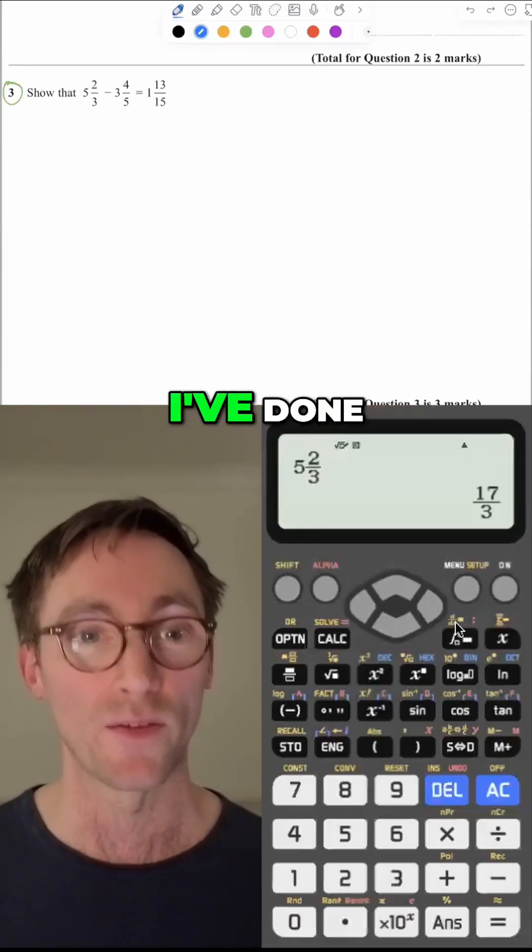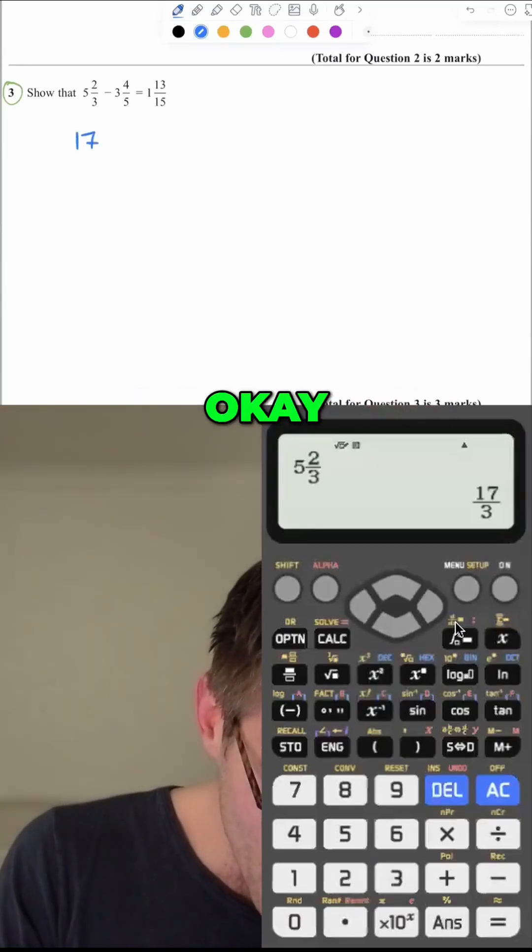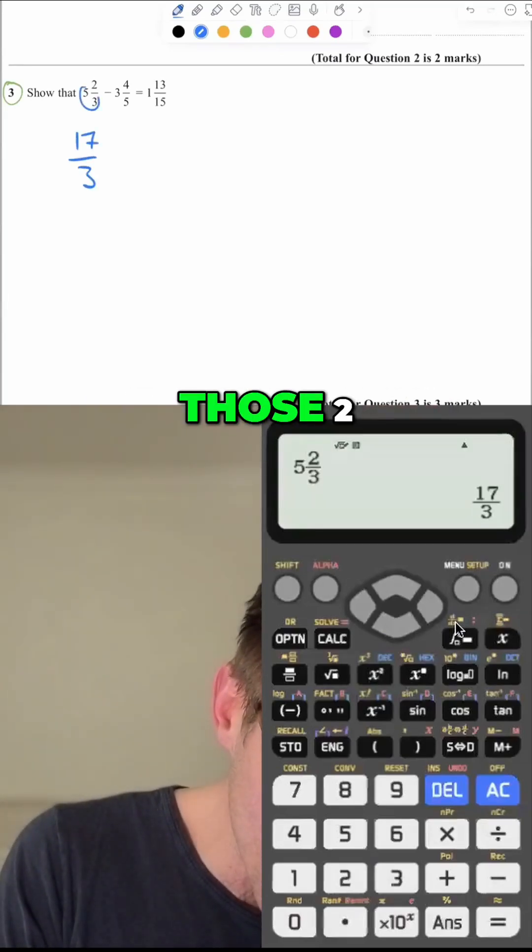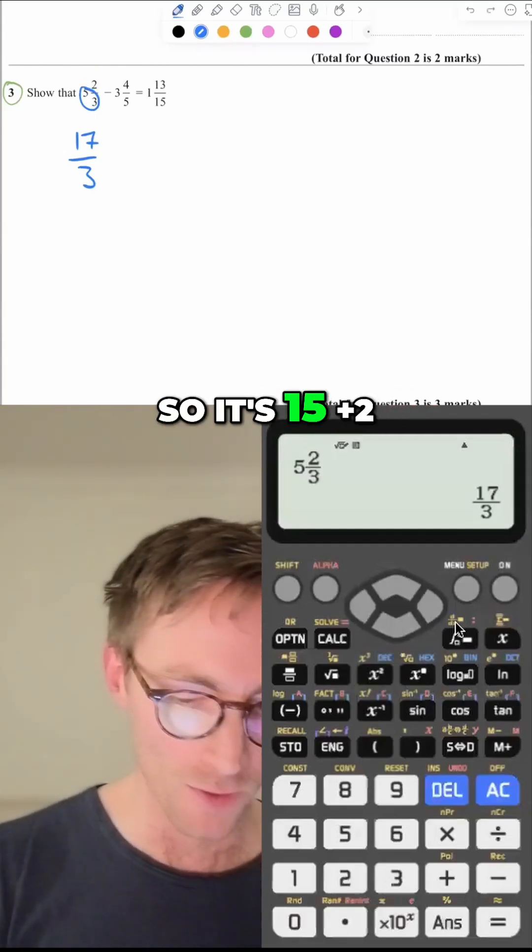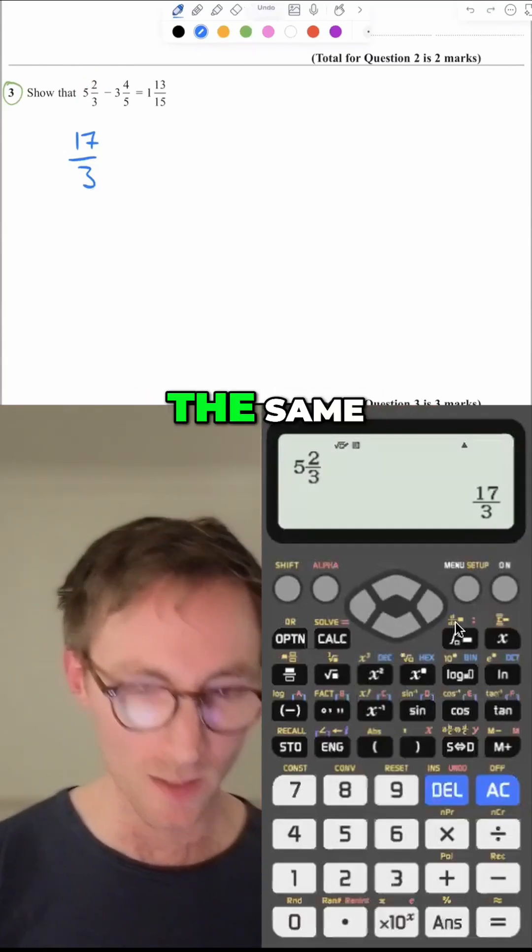And you get 17 over 3. I've not done anything clever, okay? The way you actually do it is times those two together and then add that. So it's 15 plus 2 is 17 and then the bottom number stays the same.